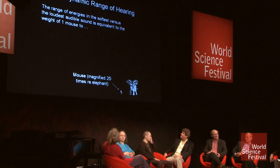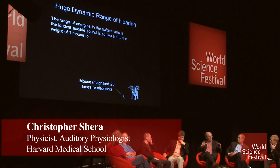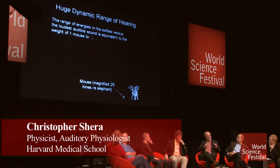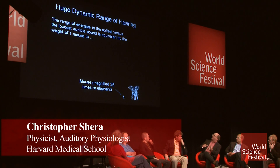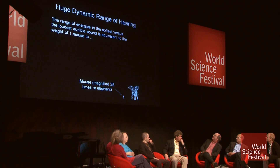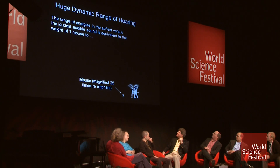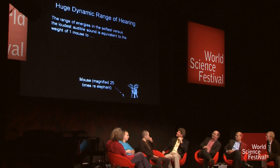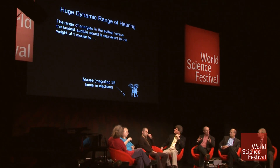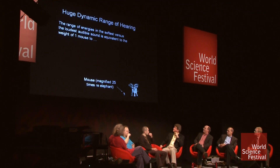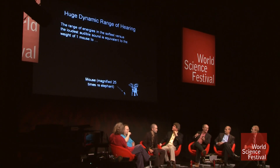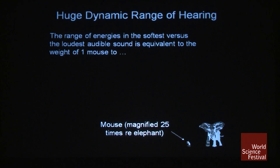The dynamic range of hearing is basically that range of sound intensities over which the ear, or the peripheral auditory system, can usefully encode sound. And it turns out that that dynamic range is so large that just quoting a number doesn't really drive the point home. So it's useful to think of an analogy.